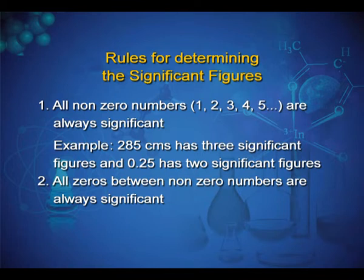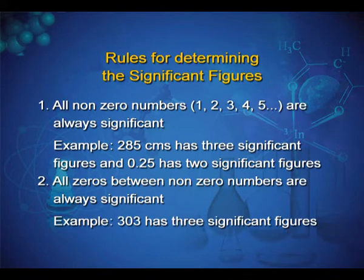Second rule: all zeros between non-zero numbers are always significant. Example: 303 has 3 significant figures.